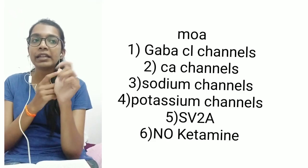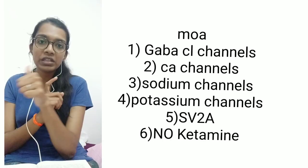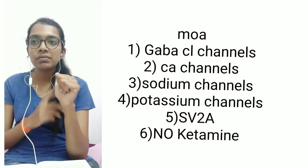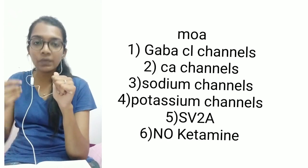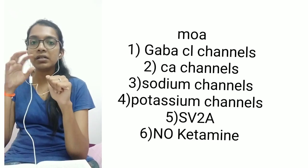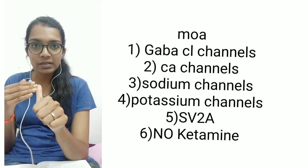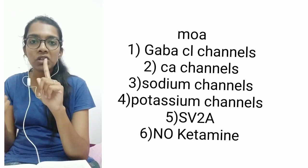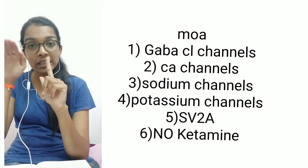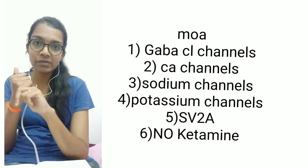There are six different mechanisms of action of anaesthetics. First, they act on ligand-gated channels such as GABA-chloride channels. When chloride enters the cell, there is hyperpolarization, so the cells remain at rest. The second mechanism is by inhibiting cation channels — mainly calcium and sodium channels.